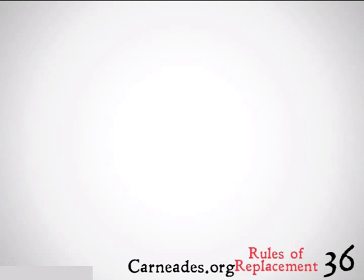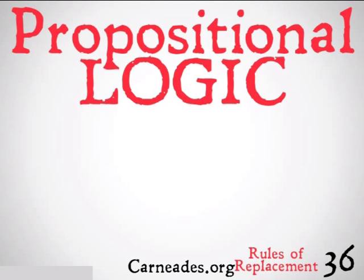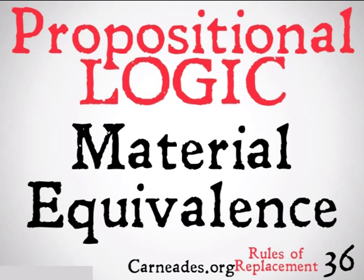Welcome back to 100 Days of Logic with 90-Second Philosophy and Carneades.org. Today we're going to be continuing with propositional logic with the rules of replacement. In this video we're going to be doing material equivalence. Like the last video on material implication, this is basically going to be a definition of the operation of equivalence that we learned about earlier but haven't seen since — that triple bar function. Let's take a look at the examples.